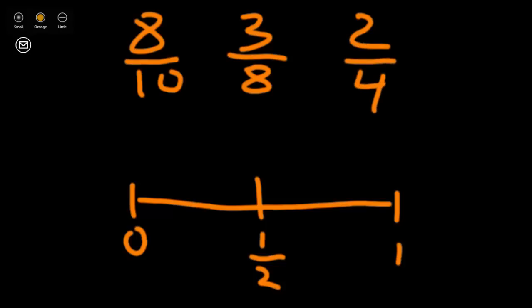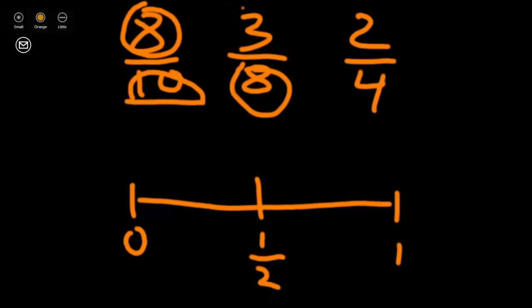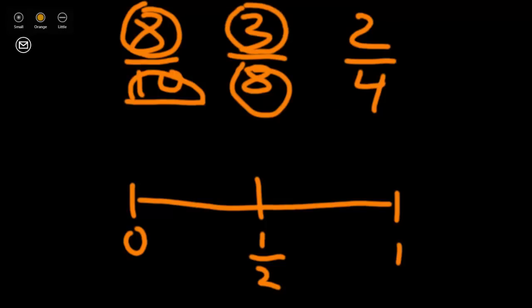Now let's take a look at what we know about each fraction. In 8 tenths, 10 is our whole, and there are 8 pieces of that whole that we're speaking about. In 3 eighths, there are 8 pieces in our whole, and 3 of those pieces are being represented in our fraction. In 2 fourths, there are 4 pieces in our whole, and 2 of those pieces are being represented in our fraction.